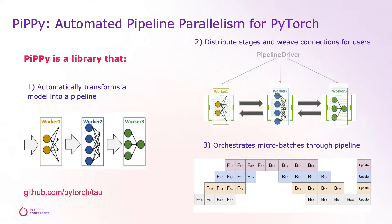PIPI stands for Automated Pipeline Parallelism for PyTorch. It is a library that automatically transforms a model into a pipeline. It can help the user build pipeline stages across multiple devices or multiple hosts and weave the connection between stages, so the user does not need to do them manually. At last, it can orchestrate micro-batches through the pipeline in an overlapped fashion to achieve parallelism.